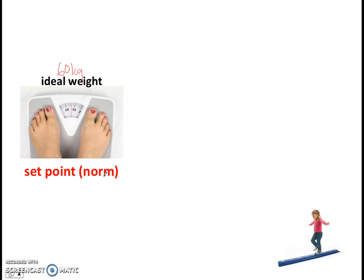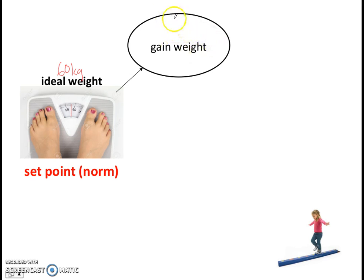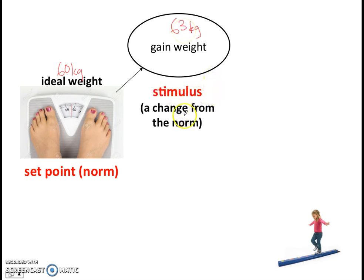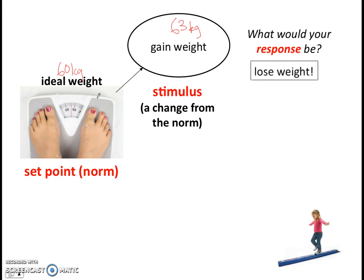Let's say I go out for a very nice buffet, eat a lot of food for Christmas, and I gain weight. I stand on the weighing scales and my weight is now 60.3 kilograms. We call this a stimulus because it is a change from the norm — in this case, an increase from the norm. What would my response be? Well, my response would be to lose weight. I'd go and run, cut back a bit here and there, to bring myself back to the ideal weight.